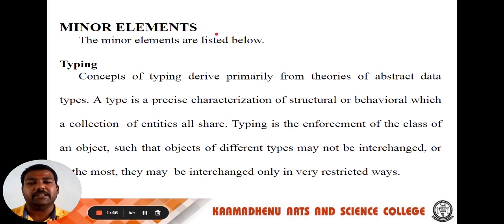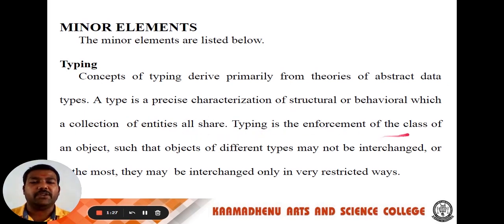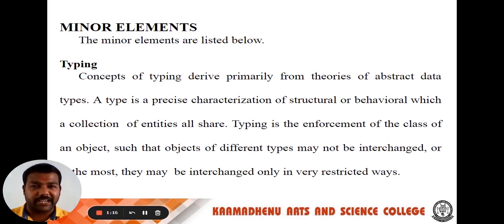The next: minor elements. First one: typing. Concepts of typing derive primarily from theories of abstract data types. A type is a precise characterization of structural or behavioral properties which a collection of entities share. Typing enforces that objects of different types may not be interchanged, or may be interchanged only in very restricted ways.